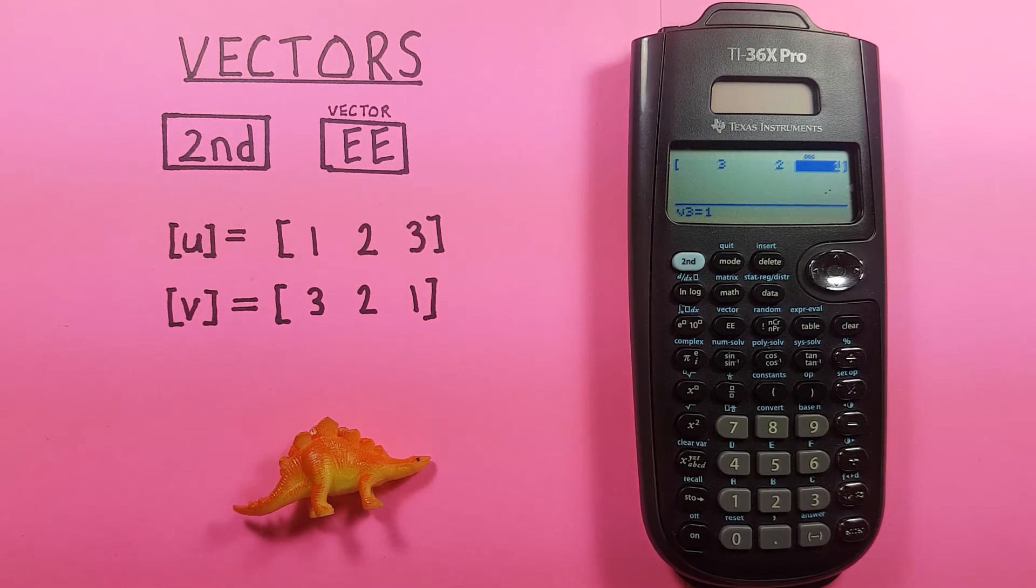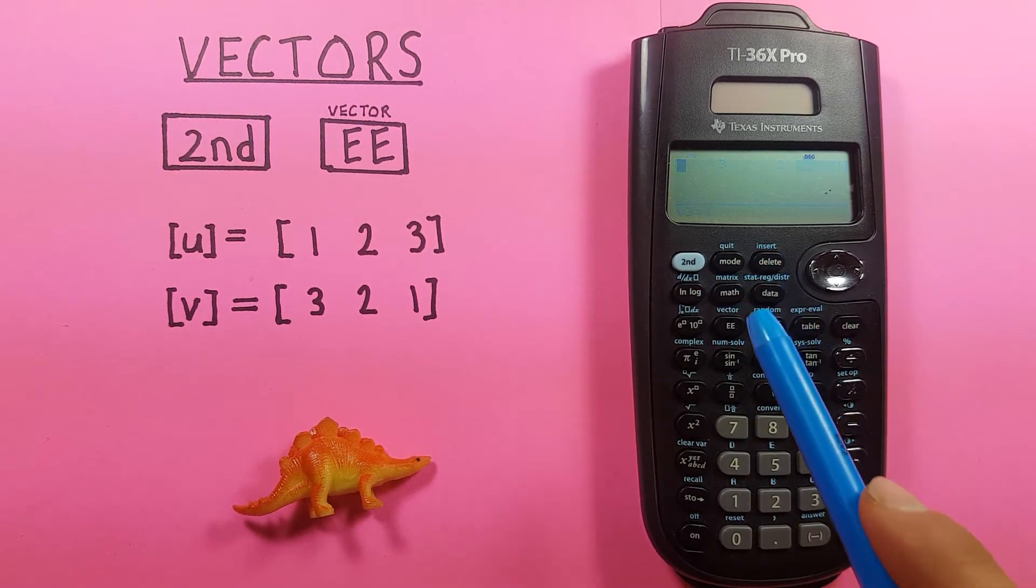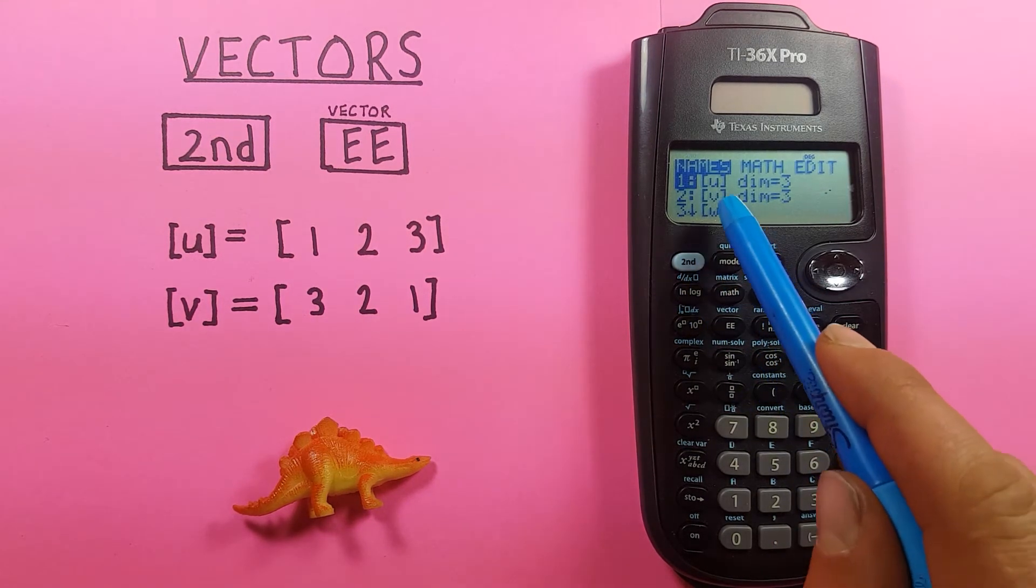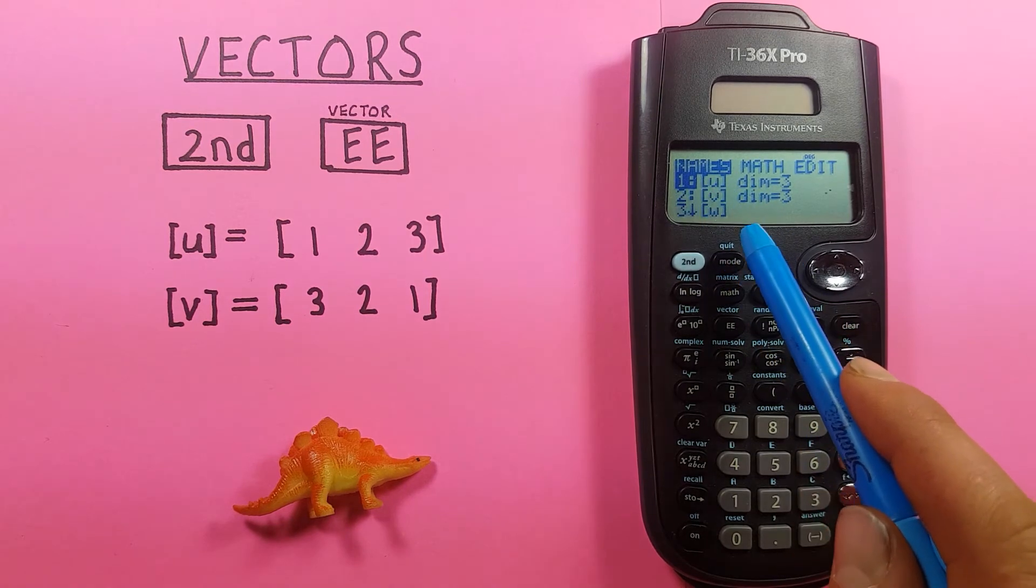After we've entered our vectors, let's click back to the main screen with second quit. And now we can do some calculations with our vectors. If we want to add two vectors like U and V, we can do this by pressing second EE.